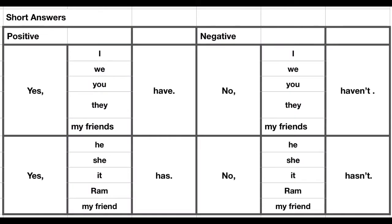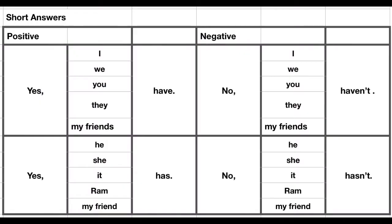And for third person singular — positive short answer: Yes, he has. Yes, she has got a car. Yes, Ram has got a car. Short form: Yes, he has. Negative: No, he hasn't. No, she hasn't. No, Ram hasn't. This is the short answer for simple present tense.